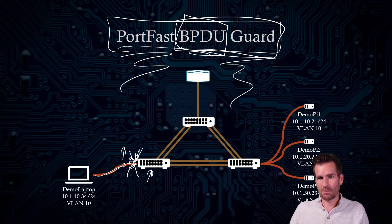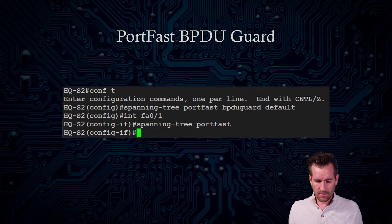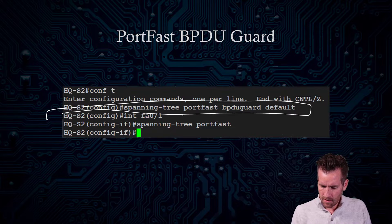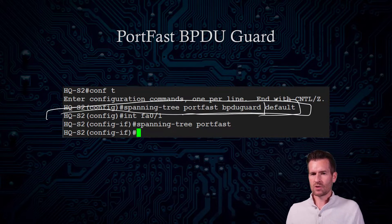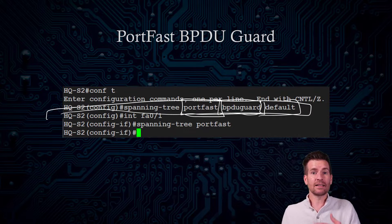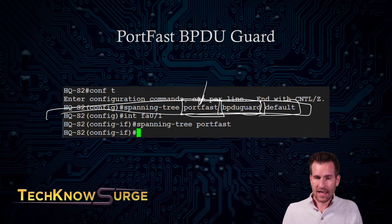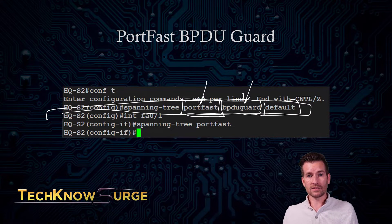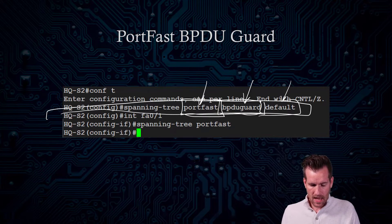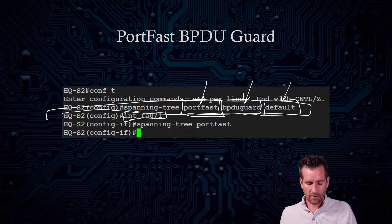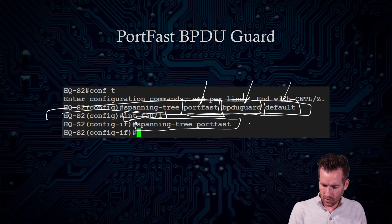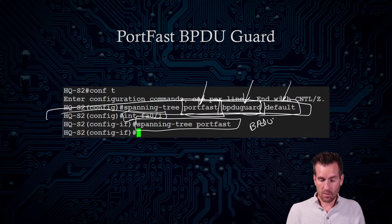We've already covered the configuration for this. In global configuration mode, you can use the command spanning-tree portfast bpdu guard default. This turns on BPDU Guard for any port that has PortFast enabled. Access ports should have PortFast turned on, and by default BPDU Guard will also be in effect. You would have to specifically turn it off for it not to take effect. Then going into individual interfaces — or a range of interfaces — you type in spanning tree portfast, and now BPDU Guard will also be enabled on it, so it will be protected.